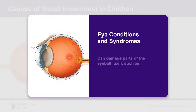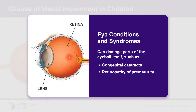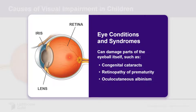Eye conditions and syndromes can damage parts of the eyeball itself, such as congenital cataracts, which cause the eye's lens to become cloudy; retinopathy of prematurity, where underdeveloped blood vessels in the retina can cause it to bleed and detach from the back of the eye; and oculocutaneous albinism, in which the pigmentation in the iris and the retina is reduced.